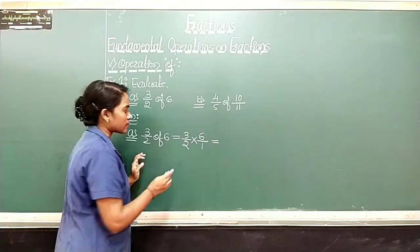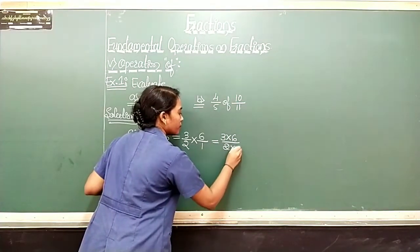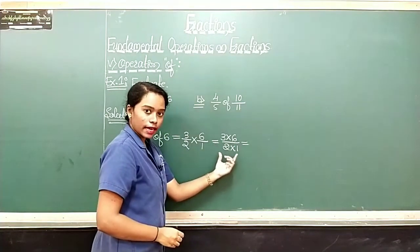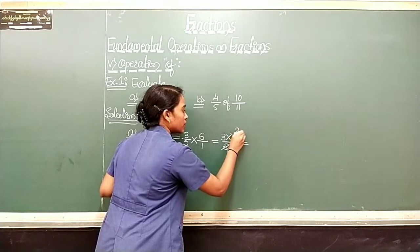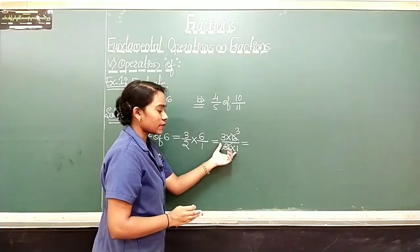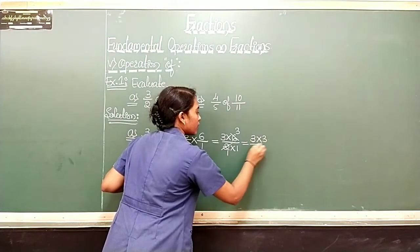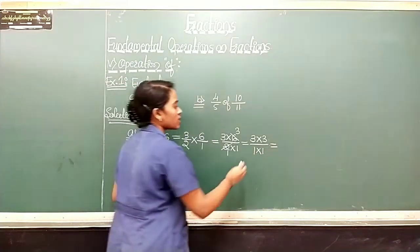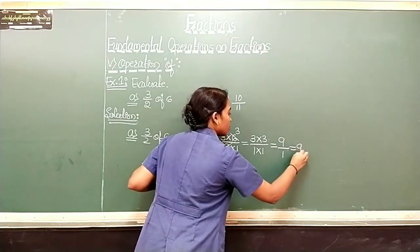Write the first fraction — 3/2 — 'of' is multiplication, and next we have 6, which can be written as 6/1. Which is equal to: multiply these two fractions — write it as 3 into 6 upon 2 into 1. Cancel common factors: 2 and 6 — 2 ones are 2, 2 threes are 6. In numerator we have 3 into 3 upon denominator 1 into 1. 3 into 3 is 9 upon 1 into 1 is 1, which is equal to 9.